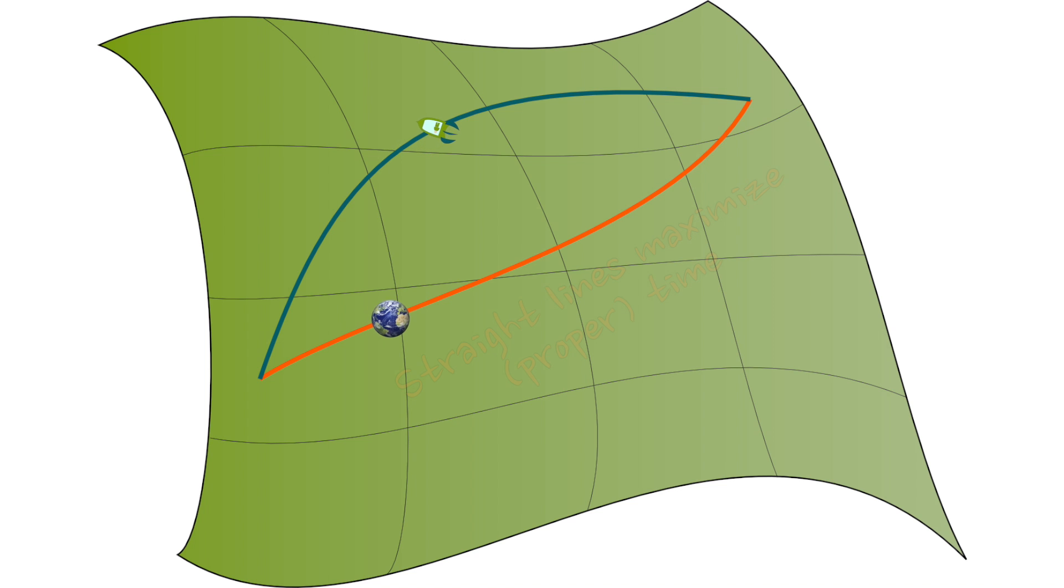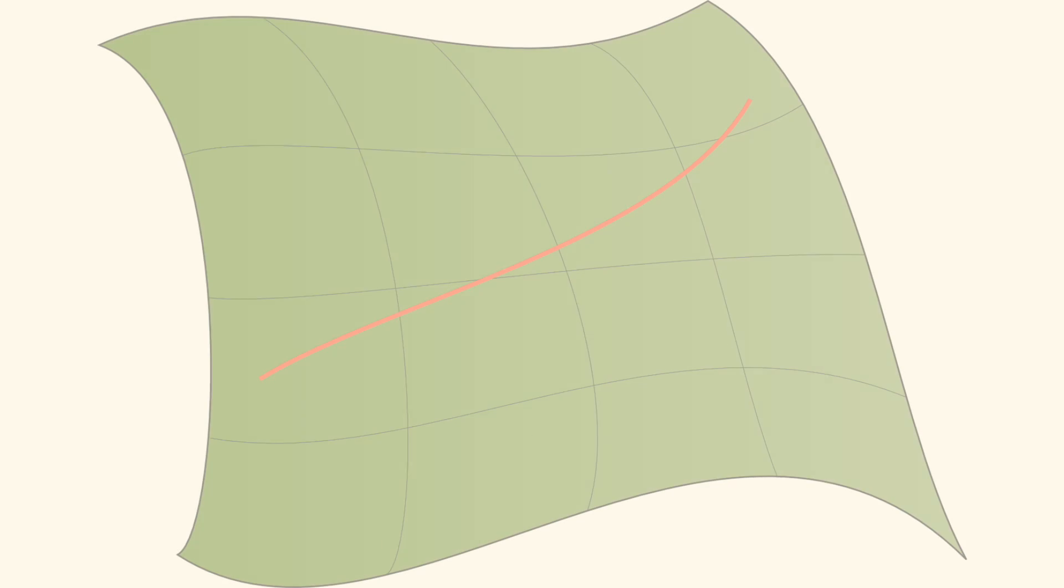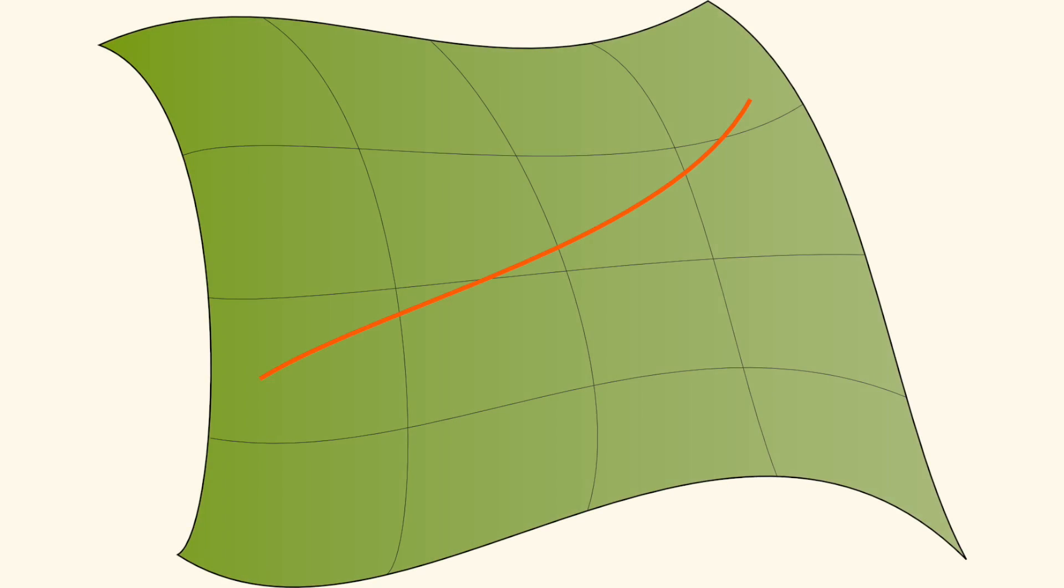Turns out that straight lines in space-time, which are the ones we follow if we undergo no acceleration, locally maximize time. Now, the meaning of this is a bit tricky. Consider a straight-line trajectory through space-time, and let's perturb it slightly, except for the starting and the end points.